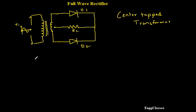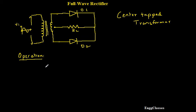Now how does this circuit work? For that, let me consider the operation — I need to study how the full wave rectifier operates. I need to consider what happens during the positive half cycle of the input and what happens during the negative half cycle of the input. That is how I am going to analyze this circuit diagram. Let me first consider the positive half cycle.